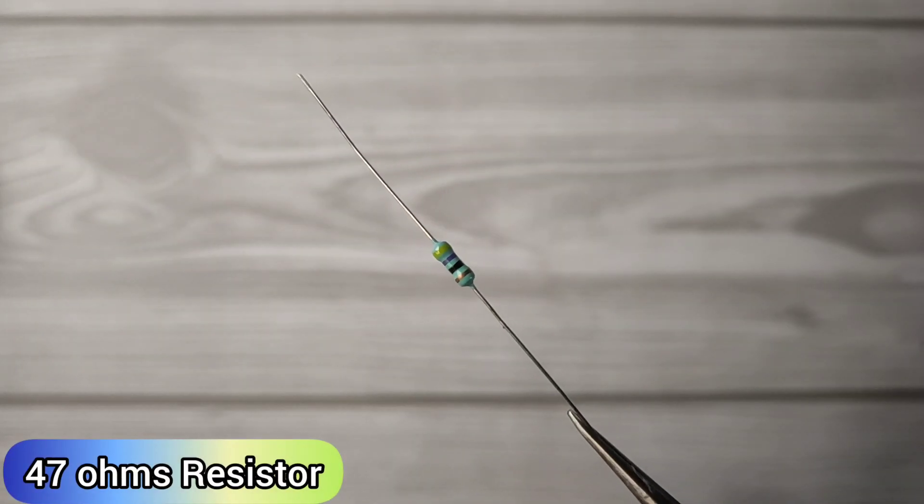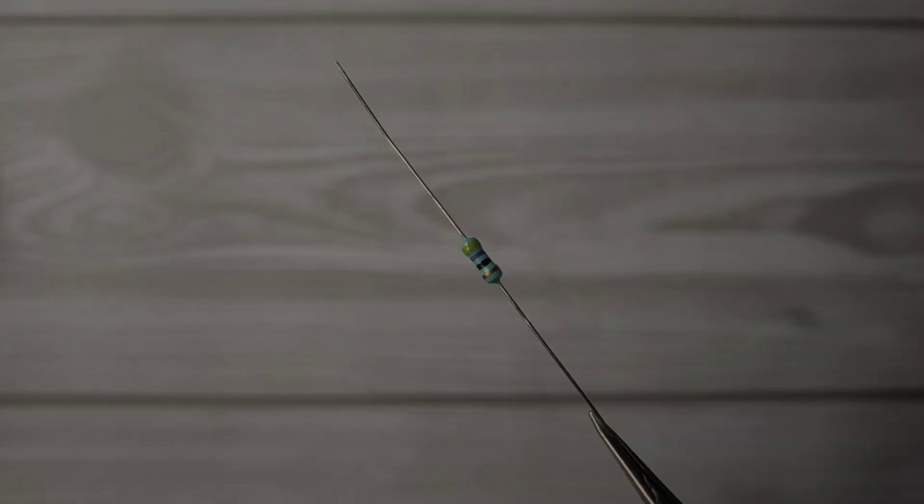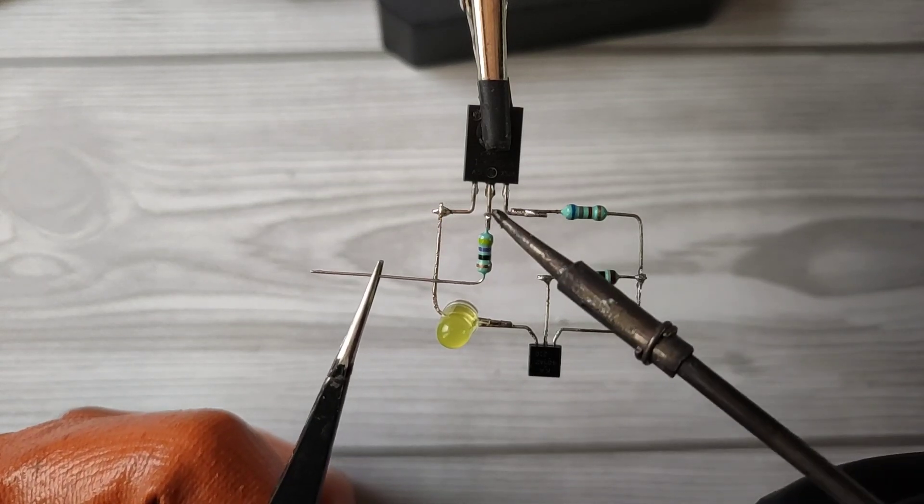Take a 47 ohms resistor and solder between collector and base of the transistor.